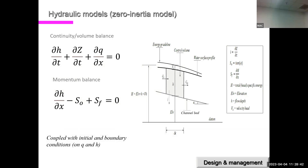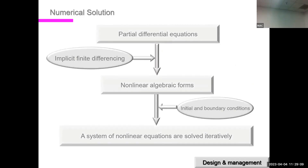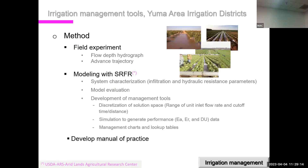In surface irrigation, mathematical modeling — typically the zero-inertia model — is used to relate dependent and independent variables. The governing equations consist of two first-order partial differential equations: mass (volume) balance and momentum balance under the zero-inertia (zero-acceleration) assumption. These are solved numerically.